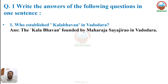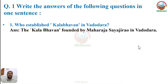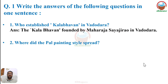First: who established Kala Bhavan in Vadodara? Name the person who established Kala Bhavan in Vadodara. Answer: Kala Bhavan was established by Maharaja Sayaji Rao in Vadodara.